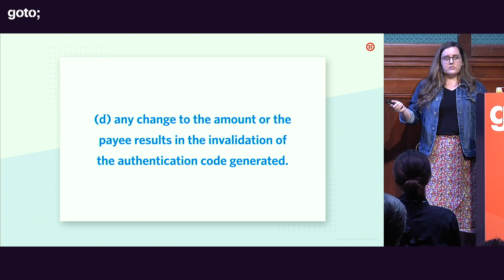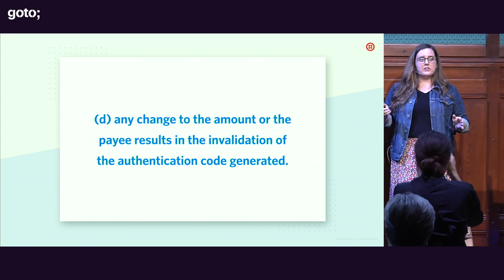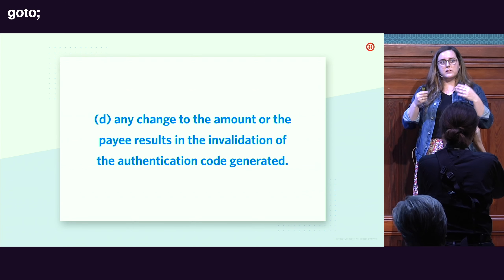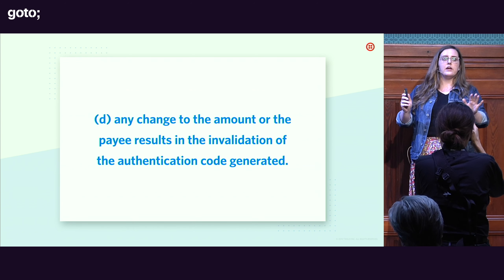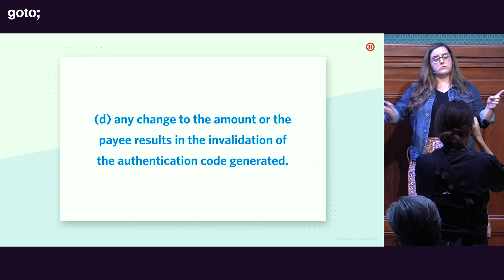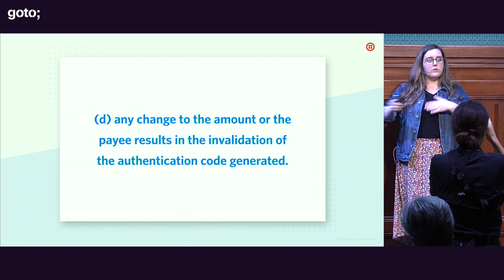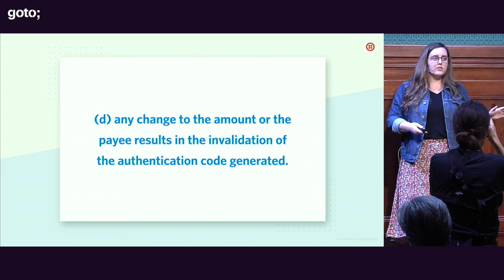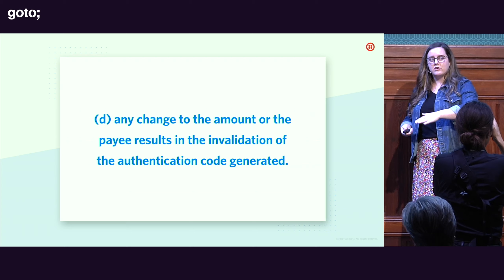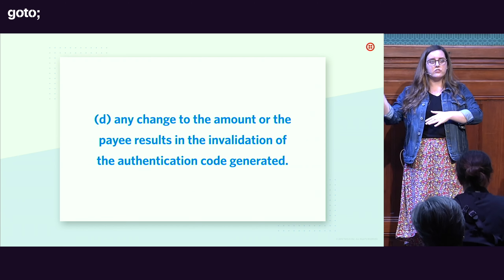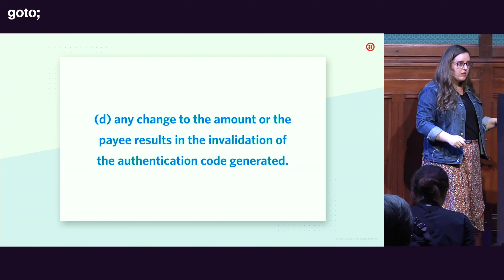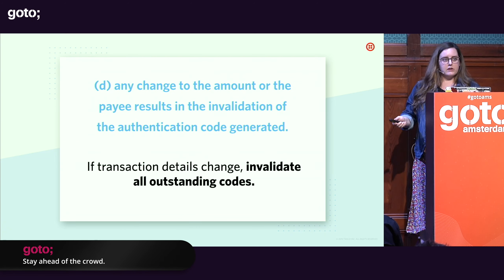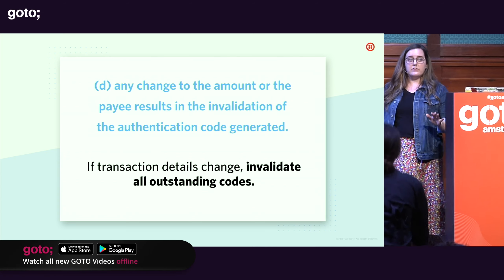Finally, any change to any details about the transaction invalidates the original code. If somebody says they don't want to send money to Jane but to Jill, that invalidates the code. Similarly, changing the amount — say from 12 to 13 euros — also invalidates the original code. And it's not just that code: all outstanding codes become invalid if any details about the transaction change.